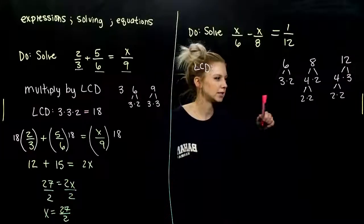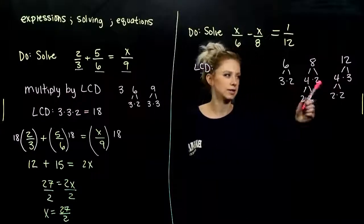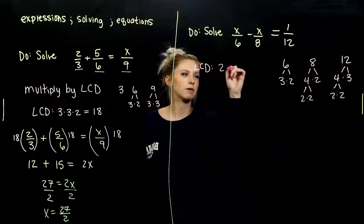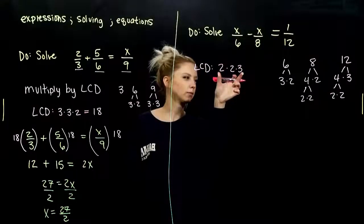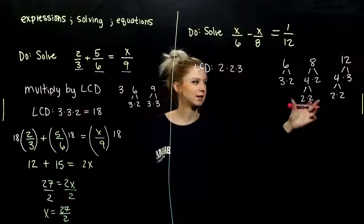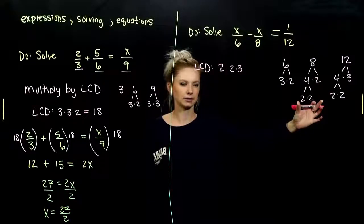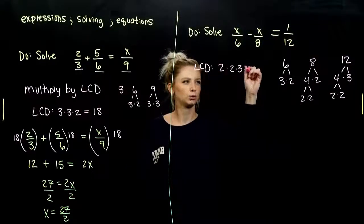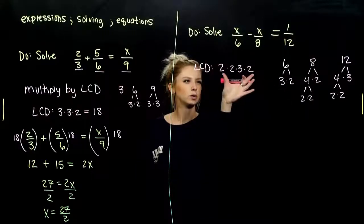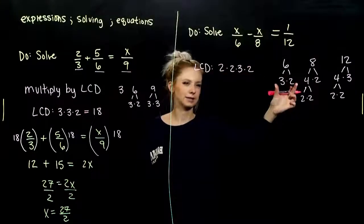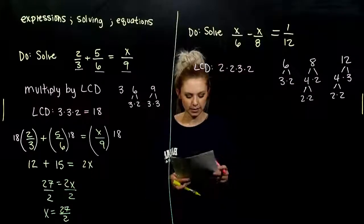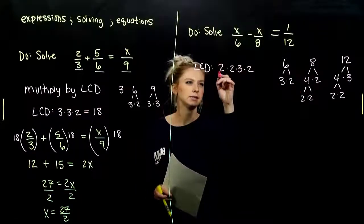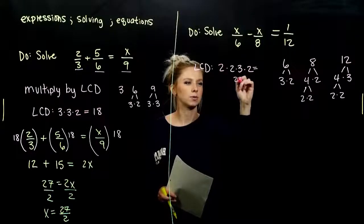So I know my LCD has to be divisible by each of these. I'm going to pick 12 to start with, because it's the biggest. And we need to look, what is my LCD missing that this factor of 8 has? Another 2. And what is my LCD missing that 6 has? Nothing. We've taken those already into account. So our LCD in this case is 8 times 3, which is 24.